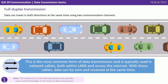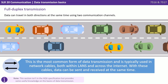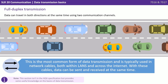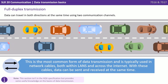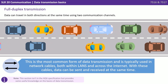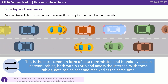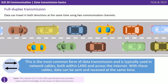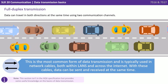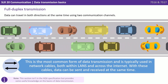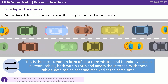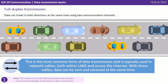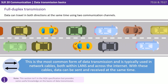And lastly we have full duplex. Data can travel in both directions at the same time using two communication channels. This is the most common form of data transmission and is typically used in network cables both within LANs and across the internet. With these cables data can be sent and received at the same time.